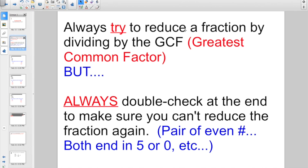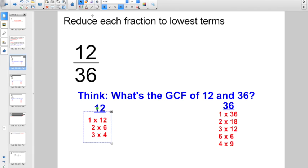And you always want to try to reduce a fraction by dividing by the greatest common factor. But you also always want to double check at the end to make sure you can't reduce the fraction again. Look at your numerator and denominator. Did you leave a pair of even numbers? You always want to try to find the greatest common factor.